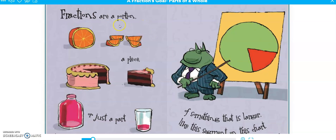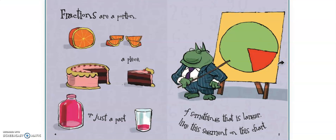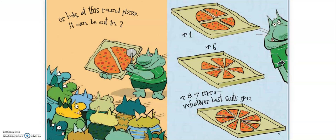Fractions are a portion, a piece, or just a part of something that is larger — like this segment on this chart, or look at this round pizza. It can be cut in two, which means each of those would be a half, right kiddos? Because there's two of them, so one half of the whole pizza.